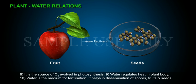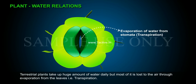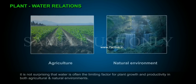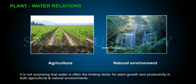Water also helps in dissemination of spores, fruits, and seeds. Terrestrial plants take up a huge amount of water daily, but most of it is lost to the air through evaporation from the leaves — that is, transpiration. A mature corn plant absorbs almost 3 litres of water in a day, while a mustard plant absorbs water equal to its own weight in about 5 hours. Because of this high demand for water, it is not surprising that water is often the limiting factor for plant growth and productivity in both agricultural and natural environments.